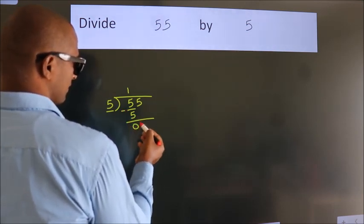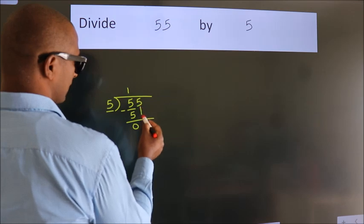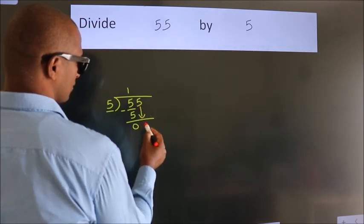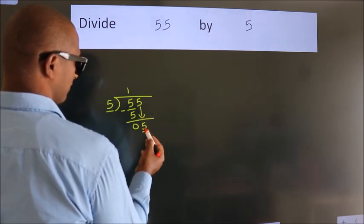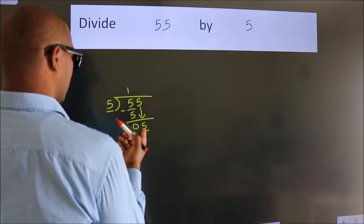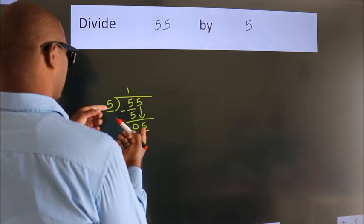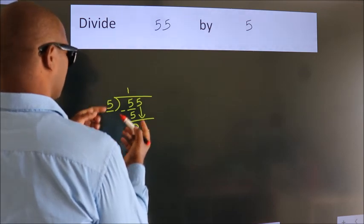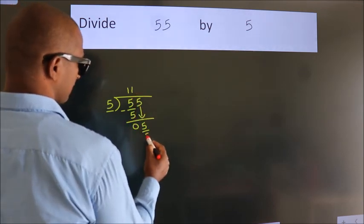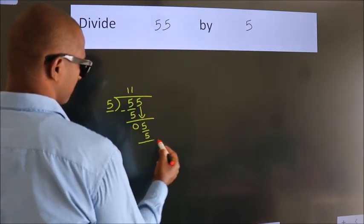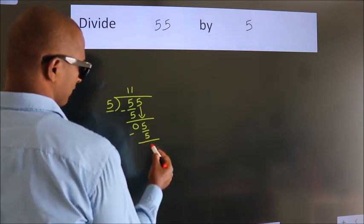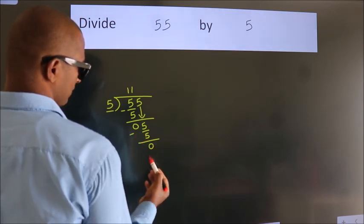After this, bring down the beside number. So, 5 comes down — we have 5. When do we get 5? In the 5 table — 5 once is 5. Now we subtract. We get 0.